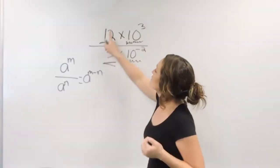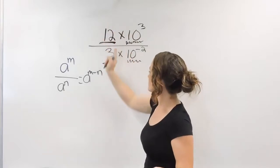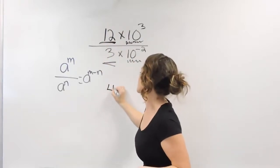Let's get to dividing here. Easy part. Twelve divided by three. Well, twelve divided by three is a four.